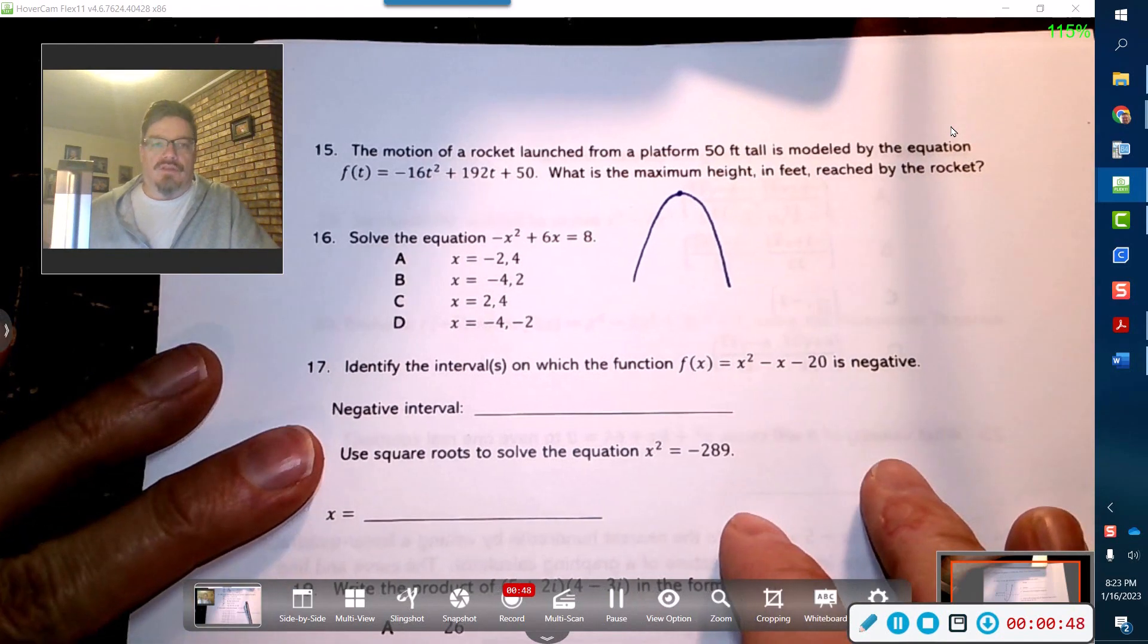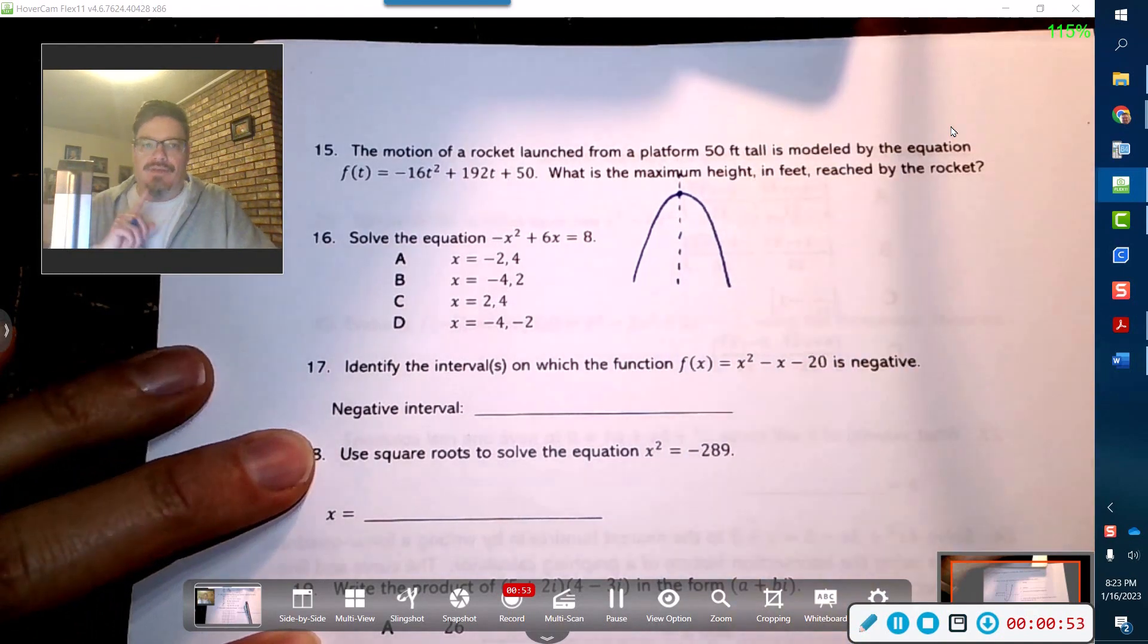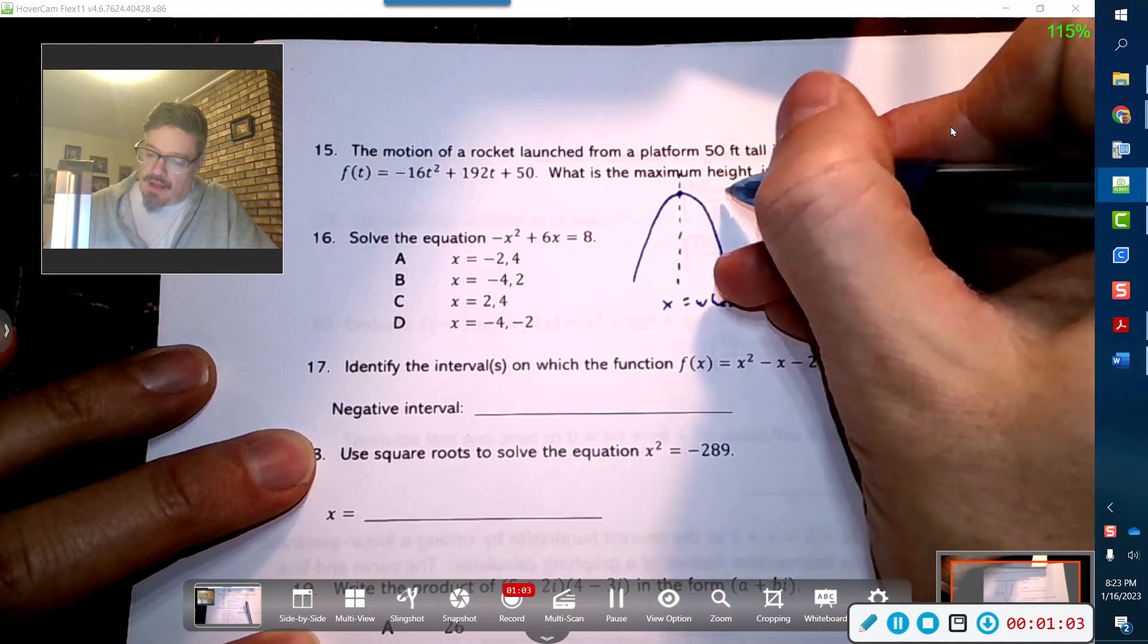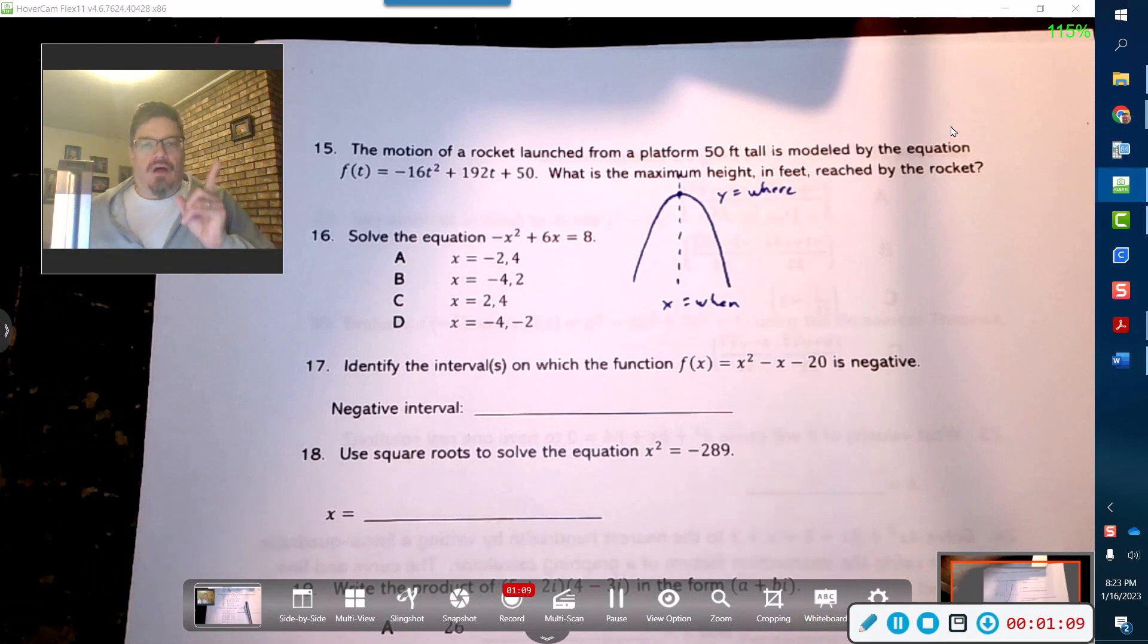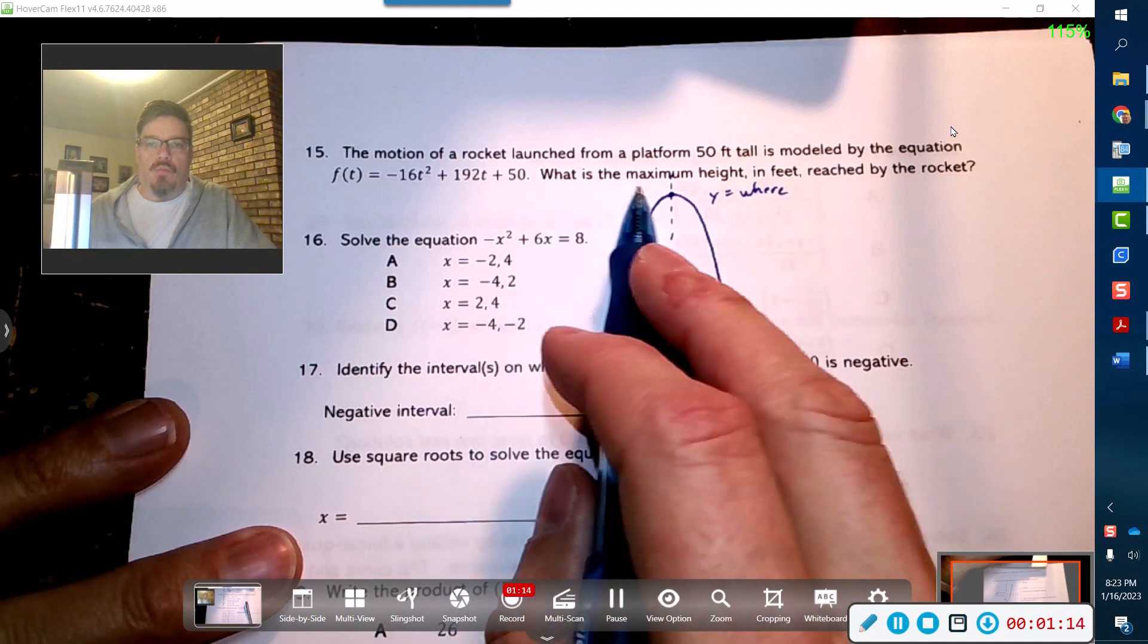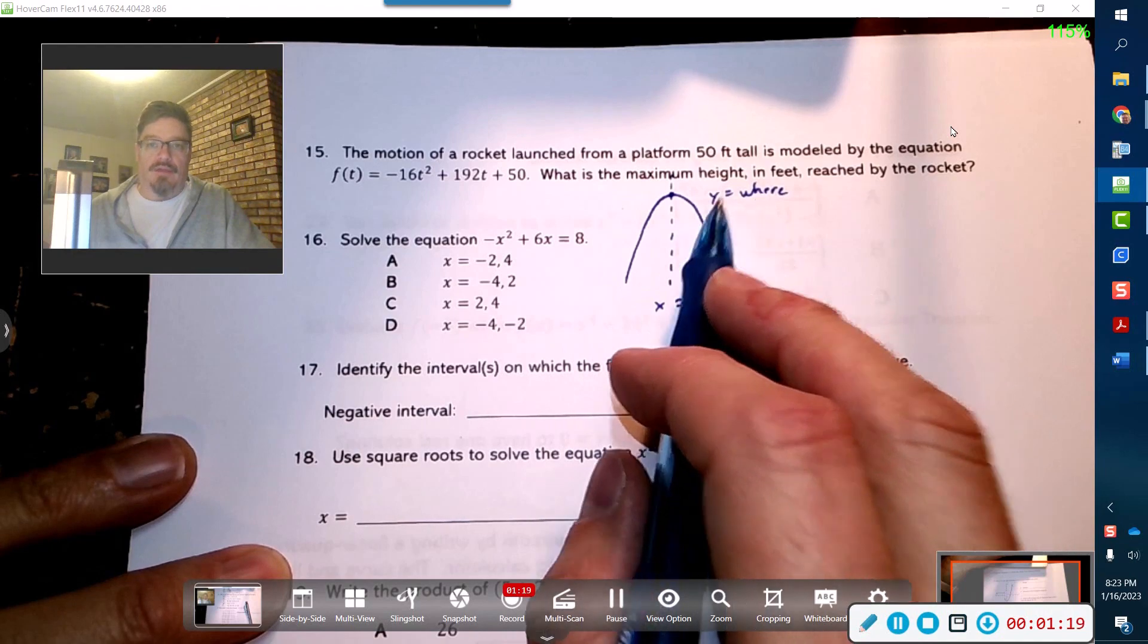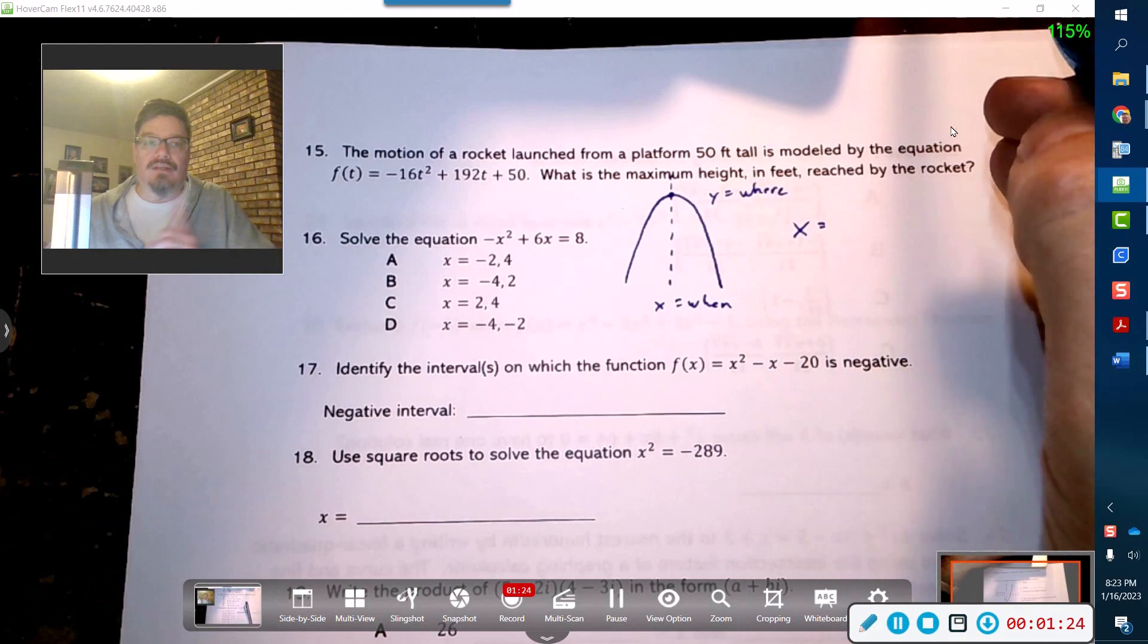First of all, we need the formula to figure out the axis of symmetry. The axis of symmetry tells us when the maximum occurs, it doesn't tell us where, it tells us when. That means x equals when, y equals where. So when we solve for x, we're going to get the when. But remember the maximum height does not tell us when it's going to reach the maximum height, it wants the where, so we have to find the y. That's going to be the second step.